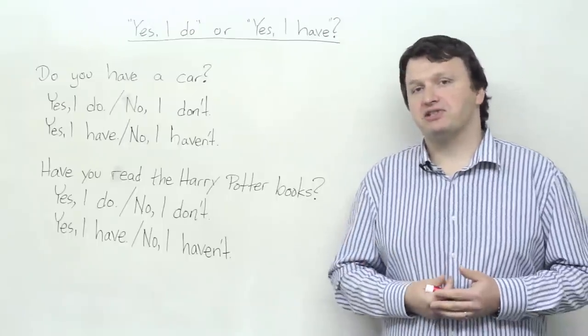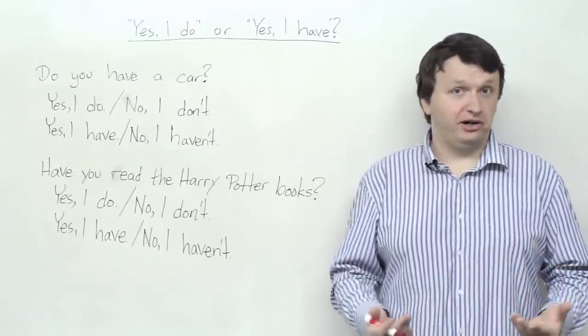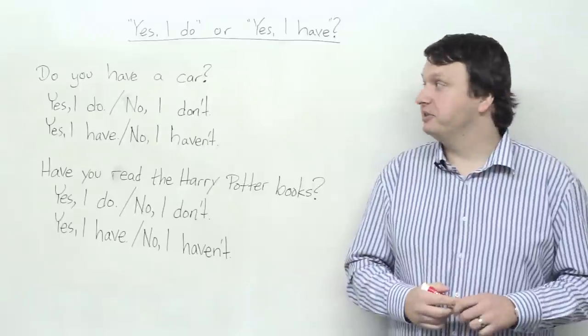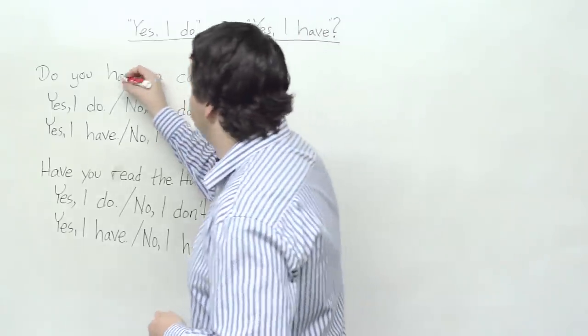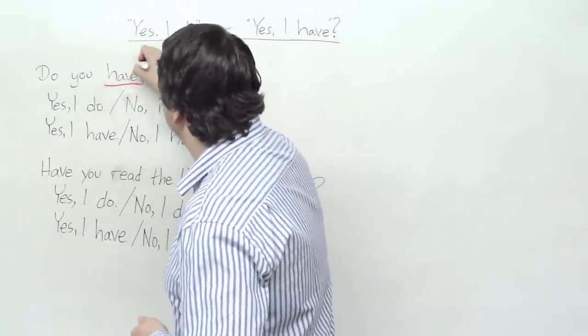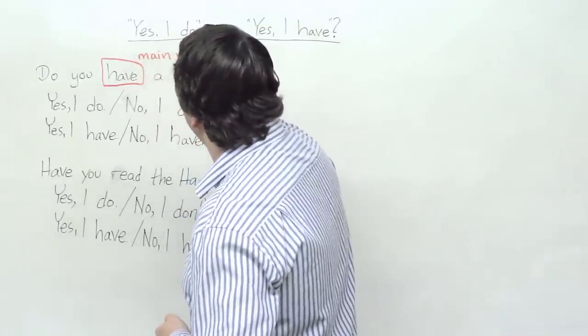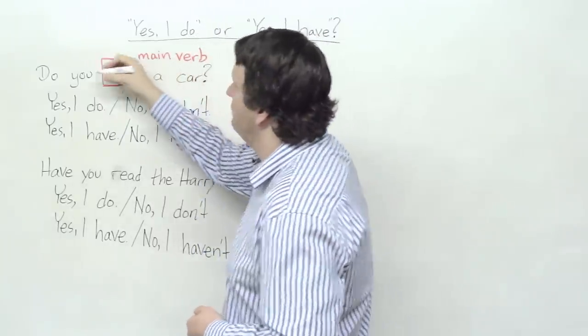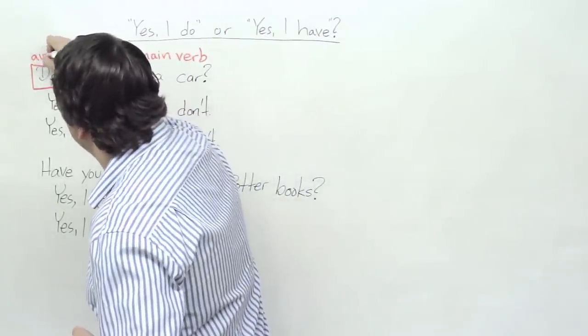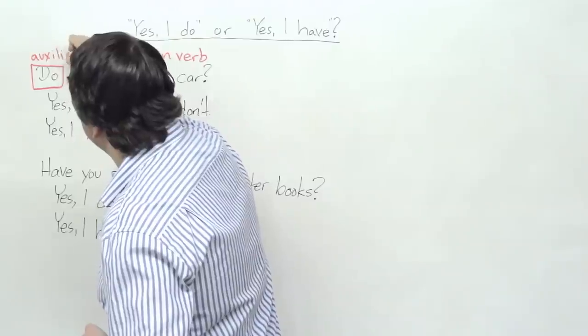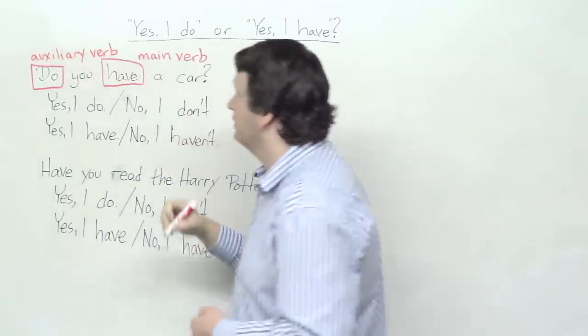Okay, so for example, the first question I have on the board is, do you have a car? So we have two verbs here. We have the main verb, which is have. This is the main verb. And we have the auxiliary verb, which is do.